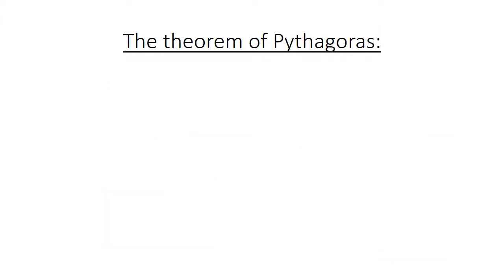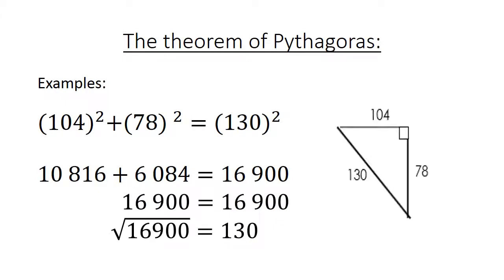The theorem of Pythagoras. We have another example here. We have a triangle. 104 square plus 78 square equals 130 square. Let's test this now. 104 square is 10,816 plus 6,084 equals 16,900. On both sides. And if we take the square root of 16,900, it is equal to 130.